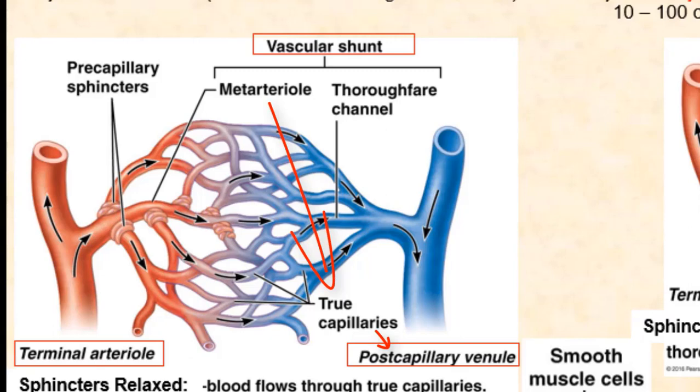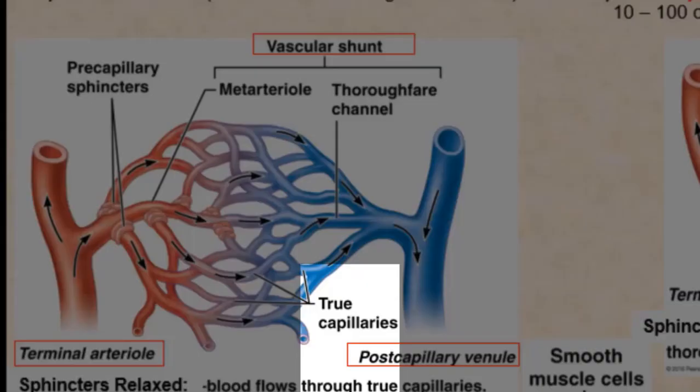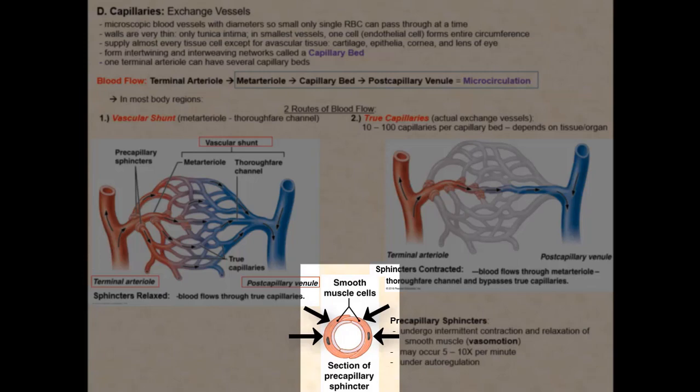Between the meta arteriole and at the entrance of the true capillaries are structures called pre-capillary sphincters. These sphincters consist of smooth muscle cells that wrap around the lumen at the entrance of the true capillary. Having these smooth muscle cells gives these sphincters the ability to contract, which constricts the lumen and completely closes off the entrance into the true capillary, and the ability to relax, which dilates the lumen and completely opens the entrance into the true capillary.